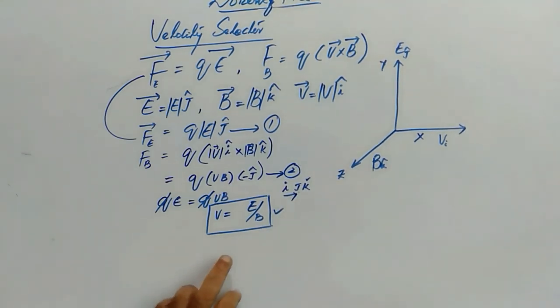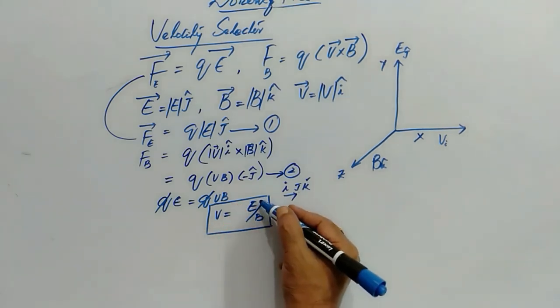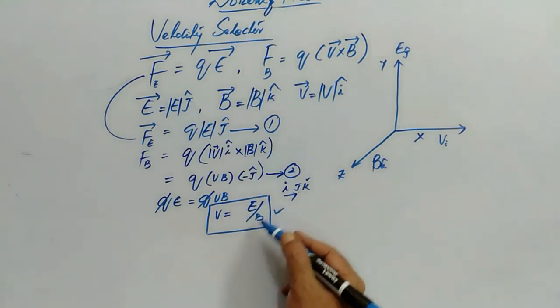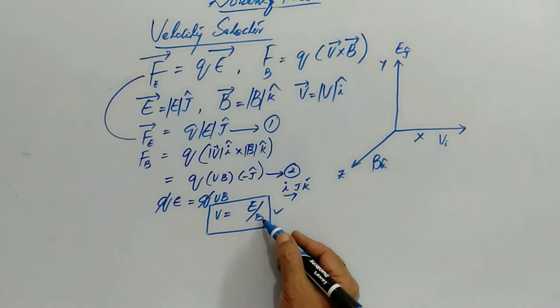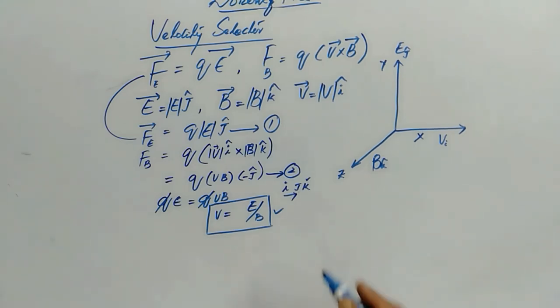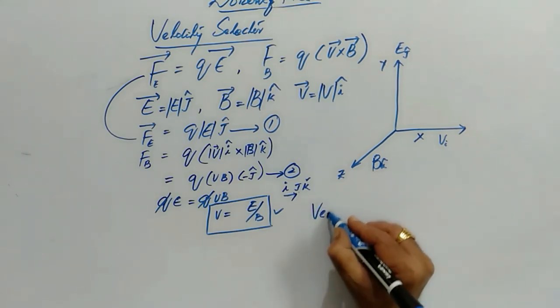So this is the velocity expression which is ratio of electric field magnitude by magnetic field magnitude. So you have to take the two fields in such a way. Suppose if you want to get some velocity as 5 meter per second then this E must be 5 times this B so that if you divide it you will get 5. So like that we can make use of this formula to select the required velocities. That's why it is called velocity selector.